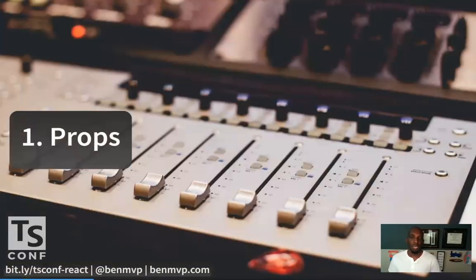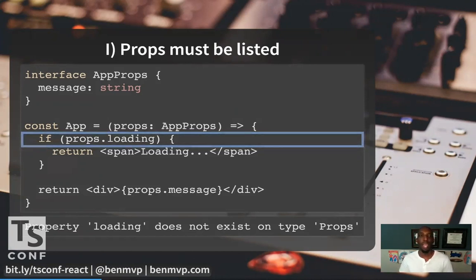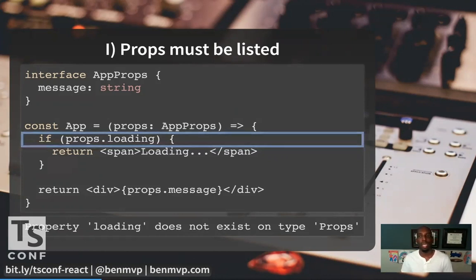First, I want to talk about typing props in TypeScript. With TypeScript, props cannot be used in a component without a definition. Here I'm trying to use props.loading, but it's not defined in AppProps — only 'message' is defined there. So I can't use it; I'll get an error saying 'loading does not exist on the interface.' How many times have you had props in a component used without a prop types definition? Maybe it's in the prop types, maybe it's not, maybe there are none defined at all.